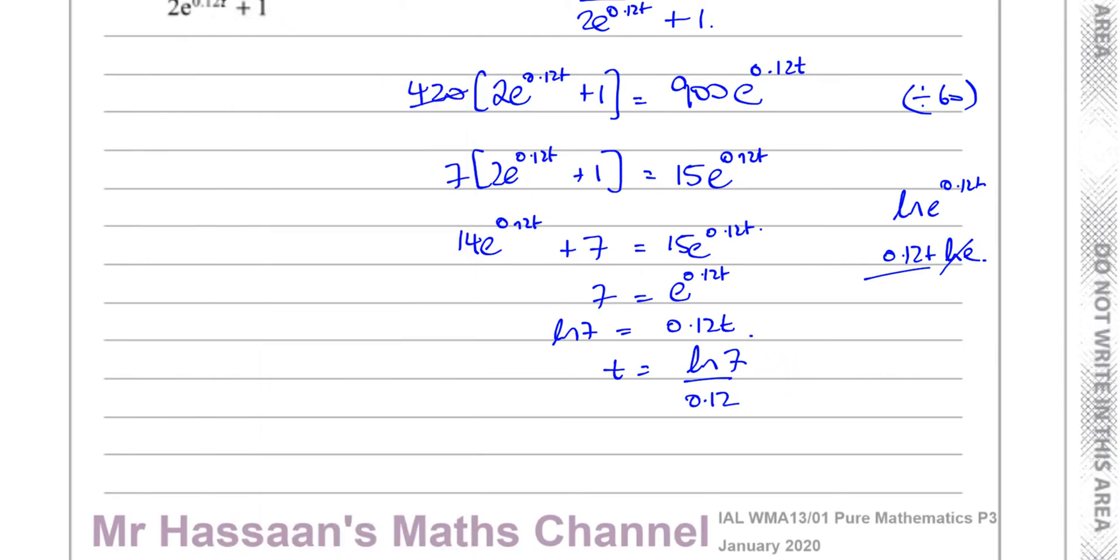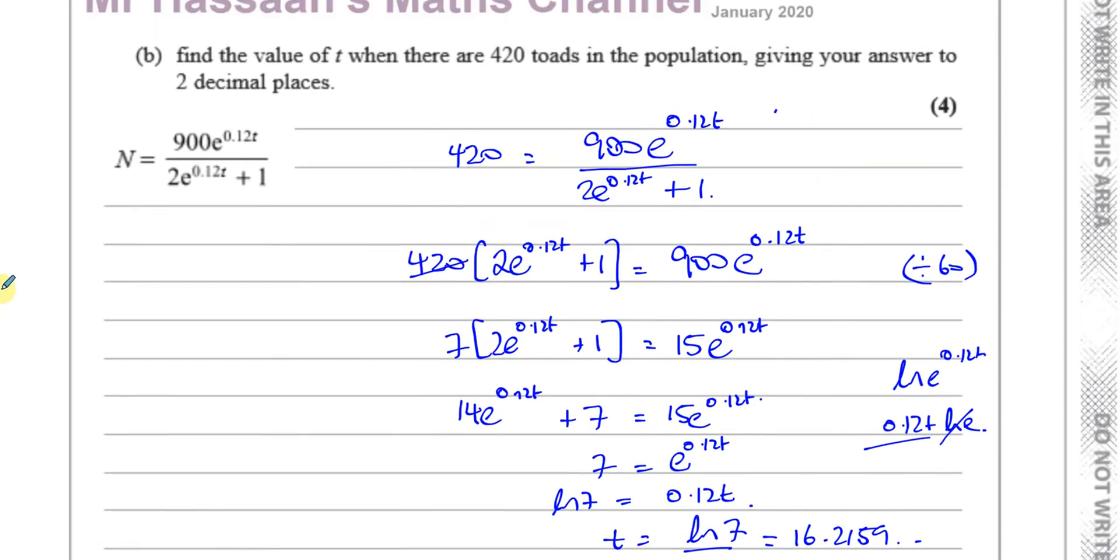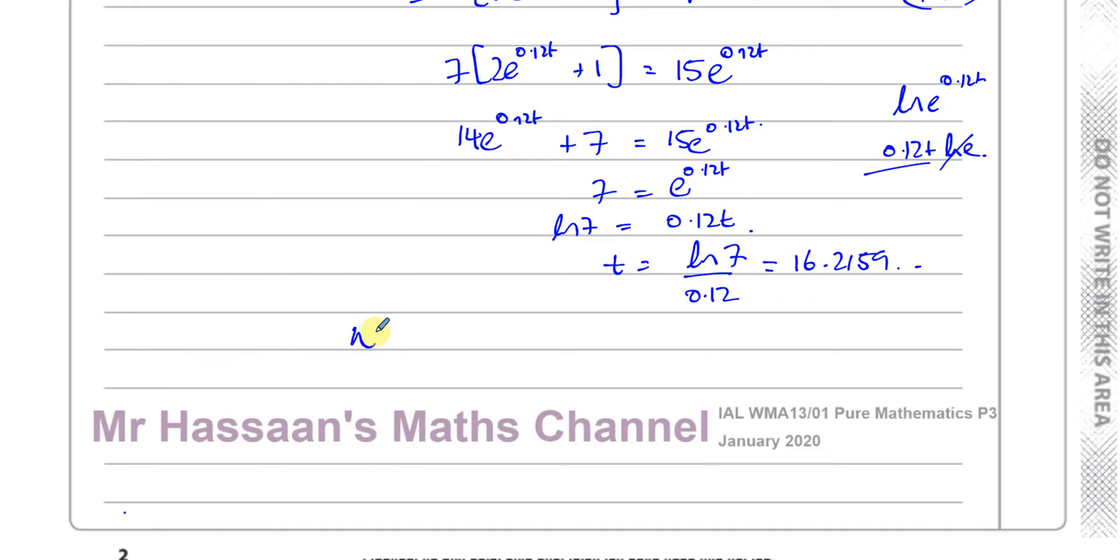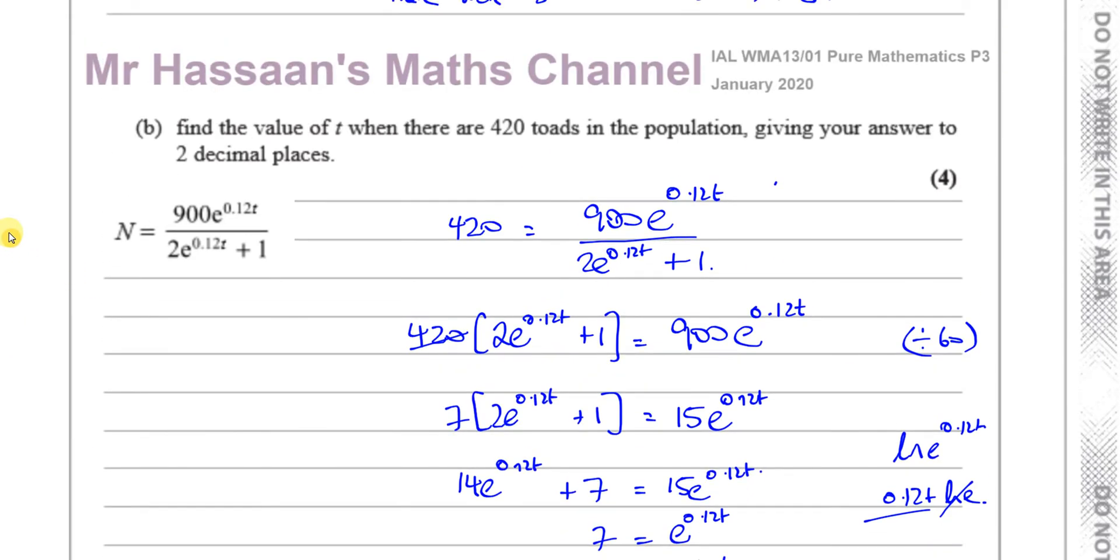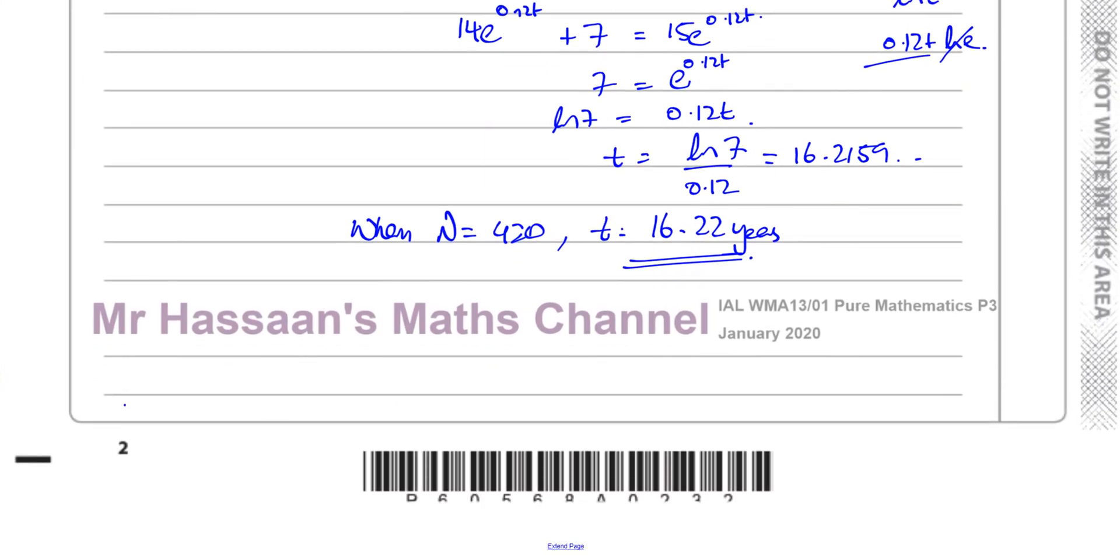So we can say that when N equals 420, t is equal to 16.22 to 2 decimal places. So the time is 16.22. So there's the answer for part b.